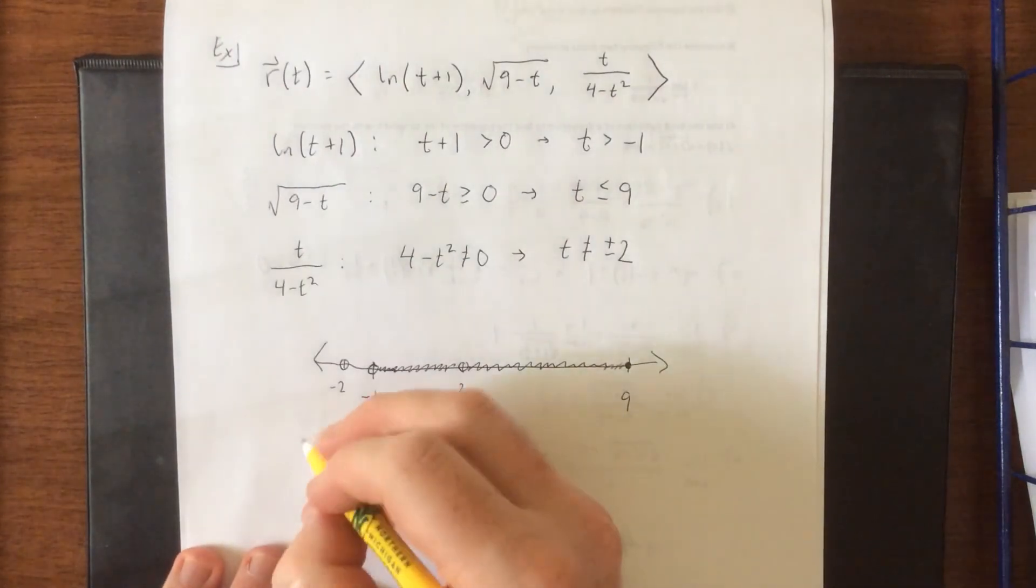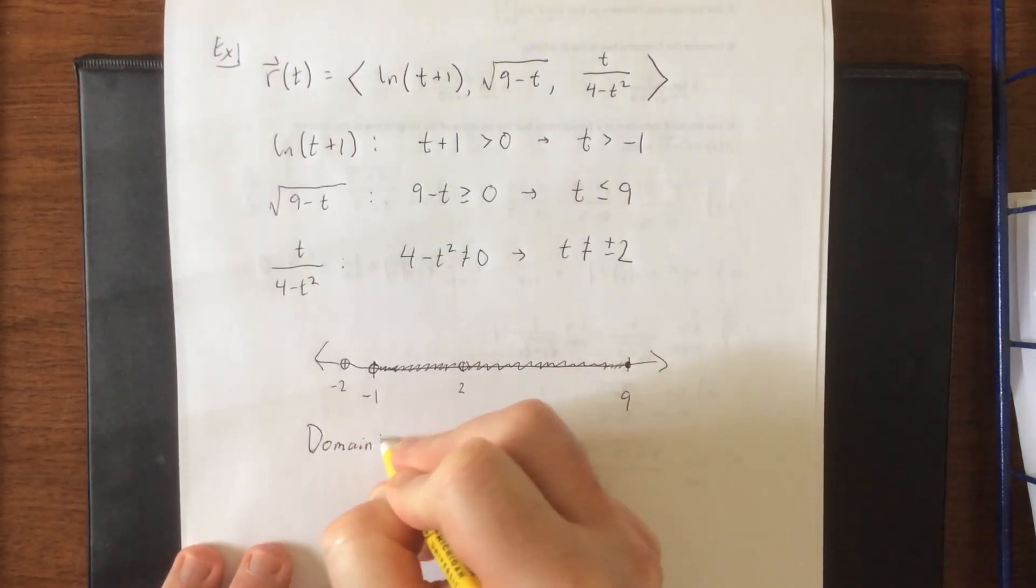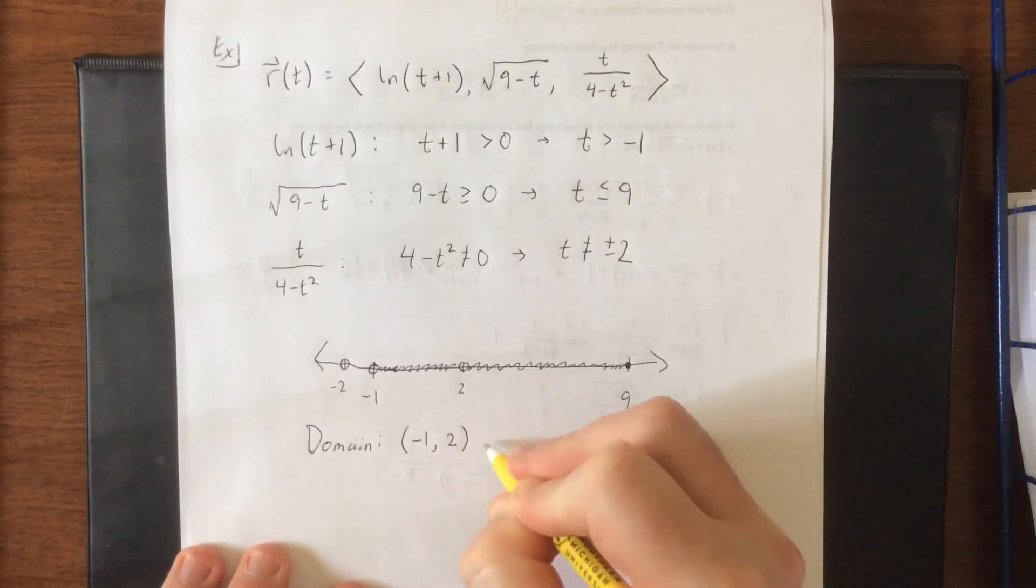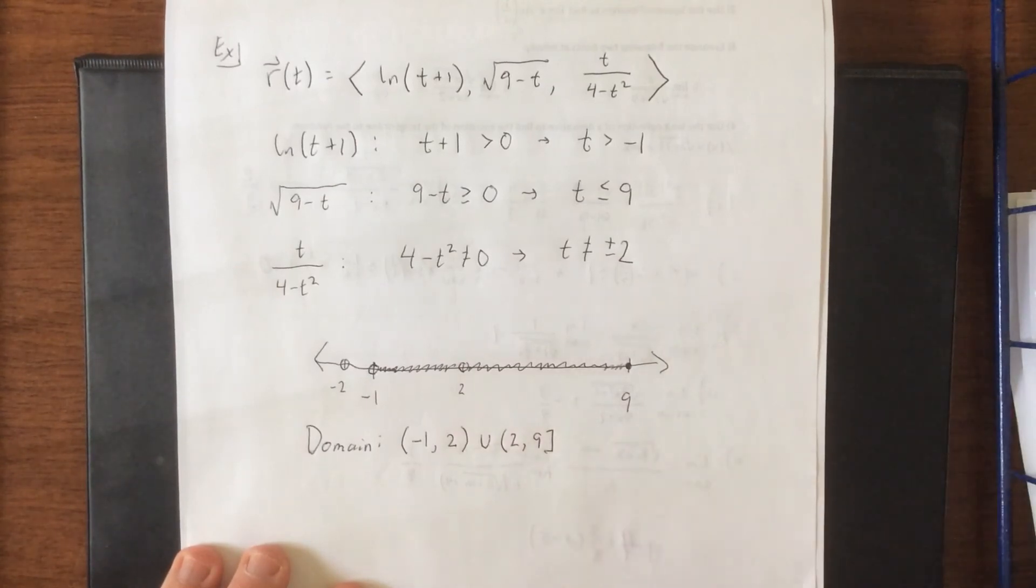So the domain for this vector-valued function given in interval notation will be from negative 1 to positive 2, union 2 to 9, open brackets wherever you have open circles, and a closed bracket where we have a closed circle.